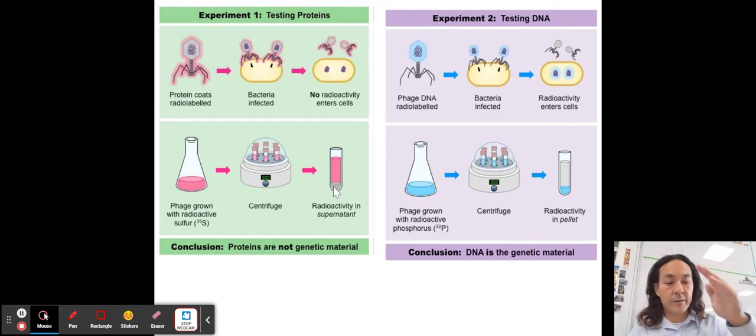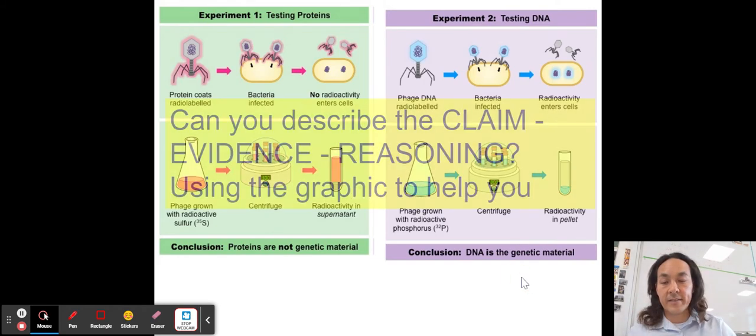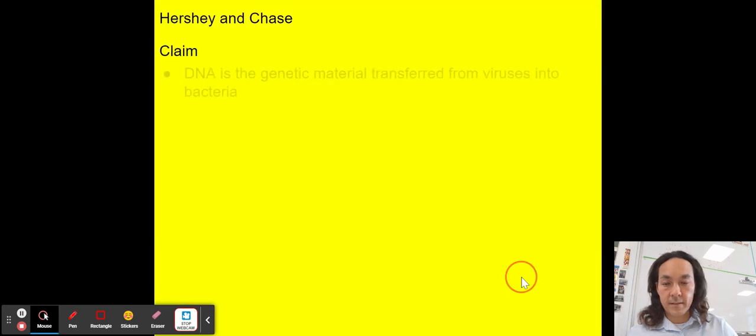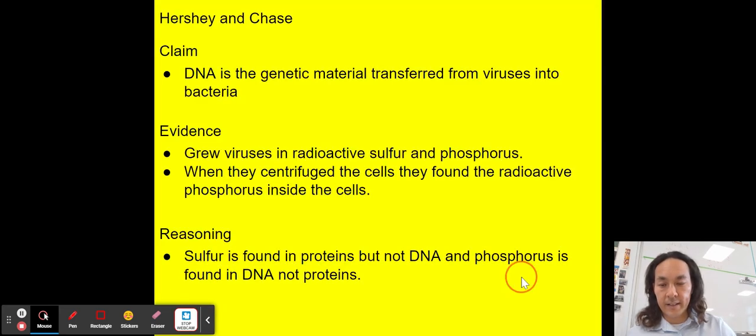It's going to put the more dense items on the bottom in a supernatant pellet here in the bottom of the test tube, just like your DNA was put in the bottom of the tube when you centrifuged it. And so they found that the radioactivity is in the pellet when it's the radioactive phosphorus. So in other words, it was DNA and it was infecting the bacterium. And so that is our CER there.